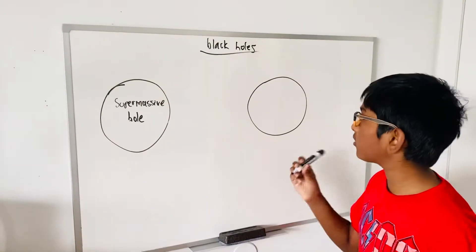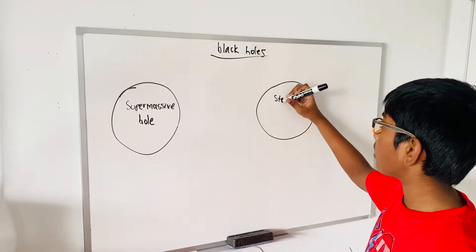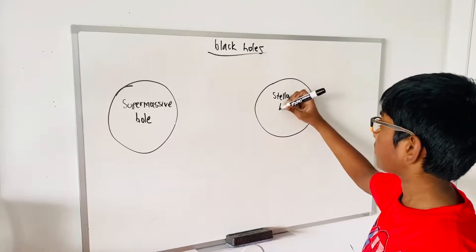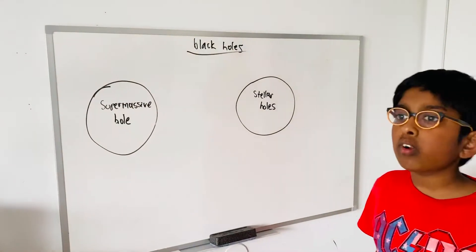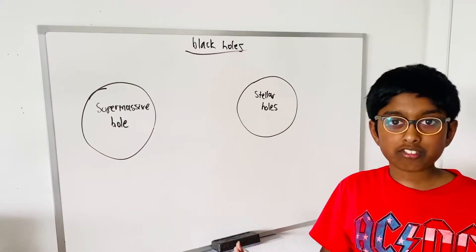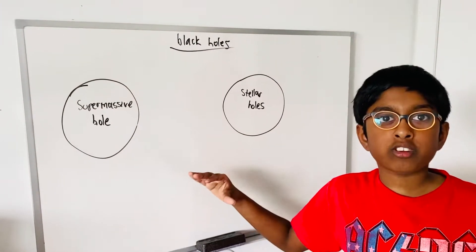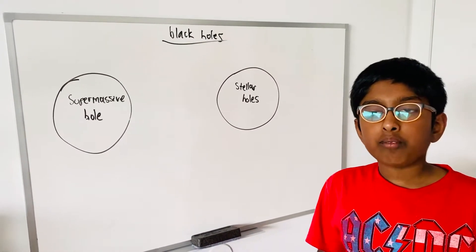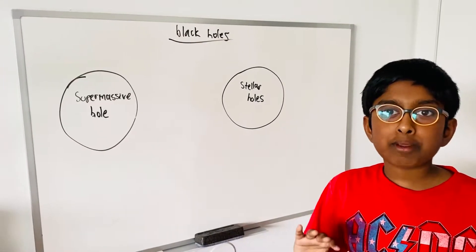Now let's move on to the next black hole, which is called stellar black holes. A stellar black hole is formed when a star 20 times massive than the Sun dies and it becomes a supernova explosion. When that happens, it turns into a black hole.